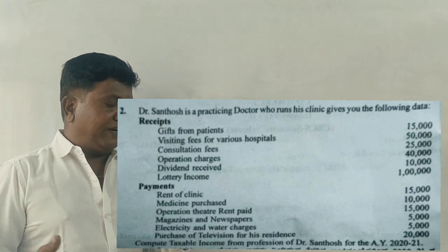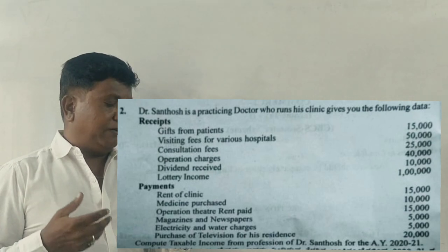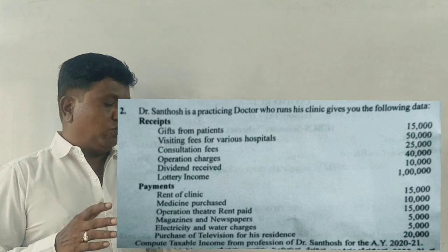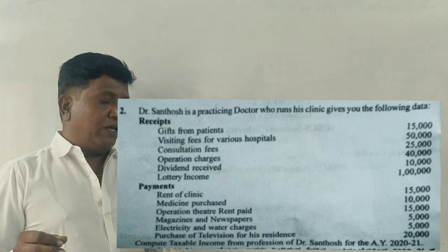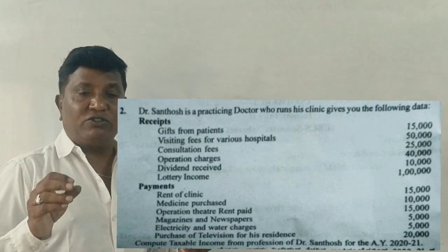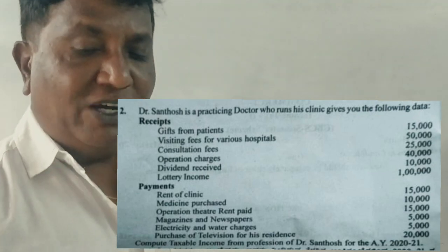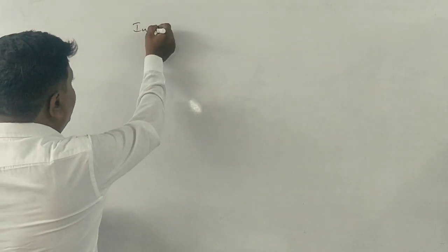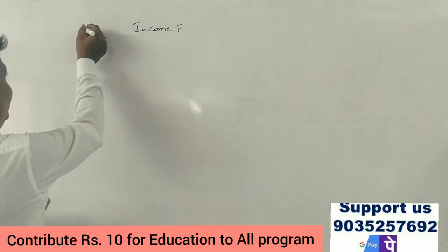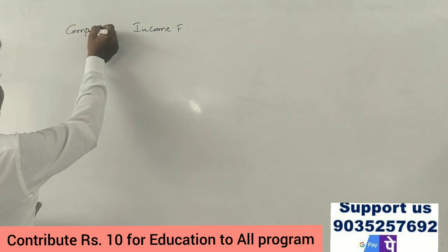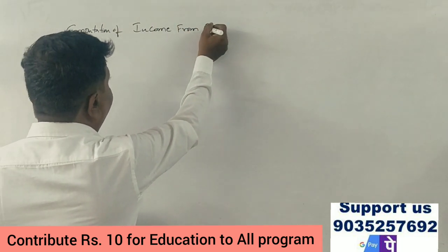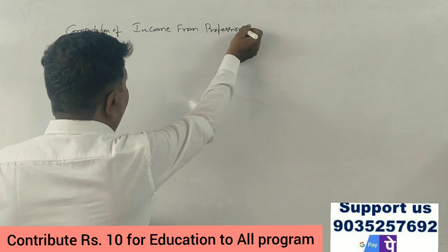Payment items include: rent of clinic, medicine purchase, operation theater rent, magazines and newspapers, electricity and water charges, purchase of television for his residence. We need to compute taxable income from profession of Dr. Santosh for the assessment year 2020-2021. Let us set up the computation of income from profession.